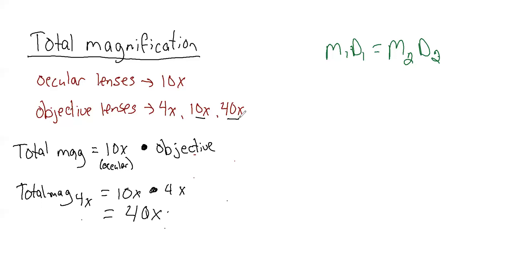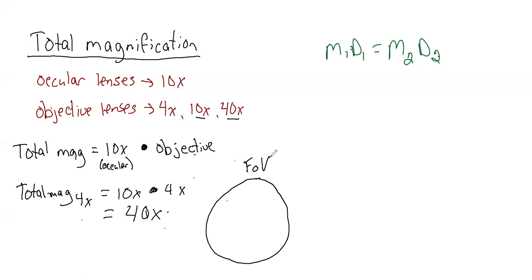We're going to use that information to talk a little bit about our field of view. The field of view is the amount of space that you see when you look in the microscope. When you look through the scope — whether it's on an internet program or in the lab — you will see a circle. This circle is what we call the field of view: how much space is underneath the light through the lenses that we can see. The easiest way to keep track of the field of view is to think about the diameter — end to end through the middle of our field of view.